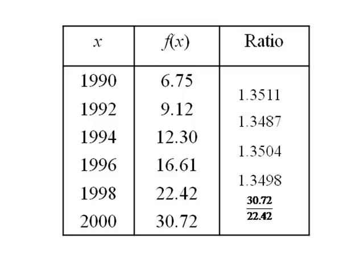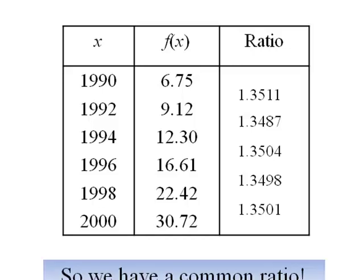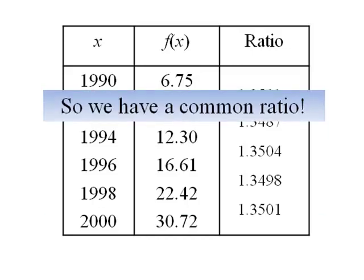We can do this because our inputs are equally spaced. What we see is we're always right around 1.35. So we do have pretty close to a common ratio. This data is not perfectly exponential, but close enough that we could model it with an exponential function. So we can say we have a common ratio.